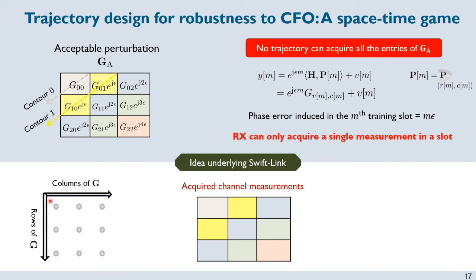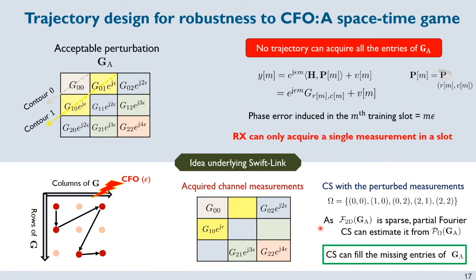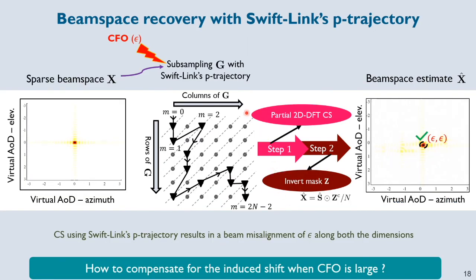Now, how does SwiftLink's trajectory work in practice? First, the transmitter applies the 0,0 circular shift of P at the first measurement slot and the receiver acquires G_{0,0}. Second, the transmitter has two options corresponding to contour 1 and chooses one at random — say the 1,0 circular shift — and the receiver acquires G_{1,0} multiplied by e^{j*epsilon} due to the phase error induced in the second slot. The third time, the transmitter picks one of three options at random, and the receiver gets G_{0,2} * e^{j*2*epsilon}. At the end, the receiver acquires a subsampled version of matrix G_A, and partial Fourier compressed sensing is used to populate the remaining entries. The resulting beam space estimate is an epsilon-epsilon shifted version of the original beam space.